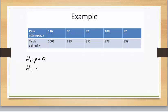Our null hypothesis says that the correlation coefficient of the population is equal to zero. And our alternate hypothesis says that the correlation coefficient of the population is not equal to zero.